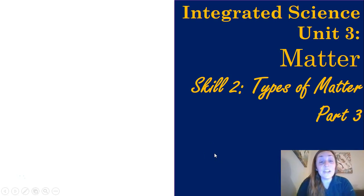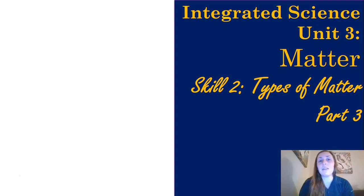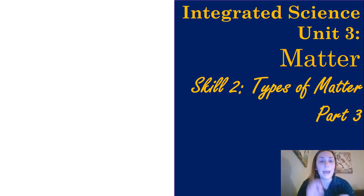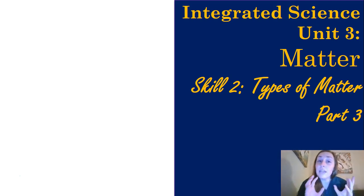Hey guys, this is Integrated Science. We are in Unit 3, the chemistry unit. We are talking about Skill 2, which is types of matter, and this is Part 3. In Parts 1 and 2 we talked about the four types of matter: elements, compounds, heterogeneous mixtures, and homogeneous mixtures.